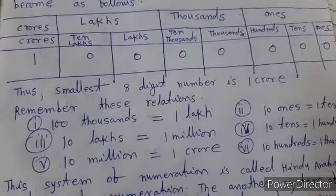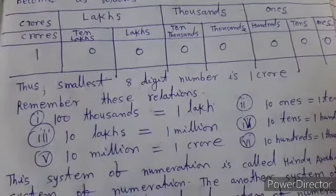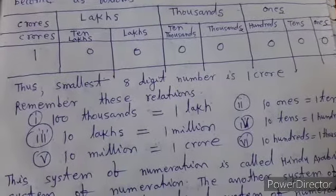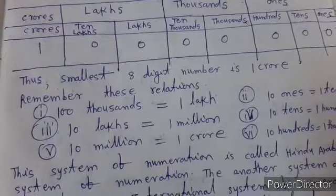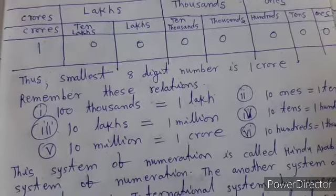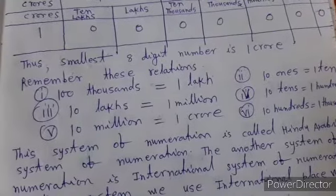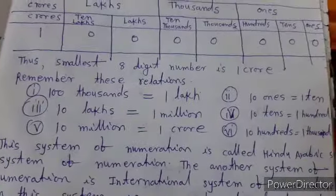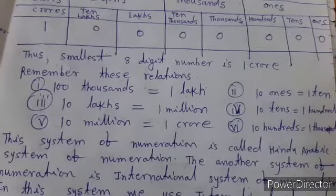Thus the smallest 8 digit number is 1 crore. Remember these relationships for upcoming test examination. 10 thousands equals 1 lakh. 10 lakhs equals 1 million. 10 million equals 1 crore. 10 ones equals 1 ten. 10 tens equals 100. 10 hundreds equals 1 thousand.